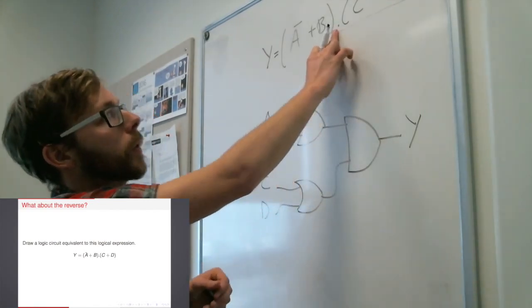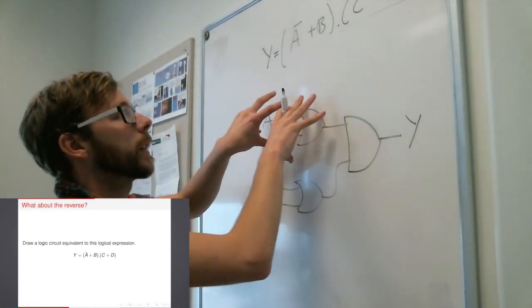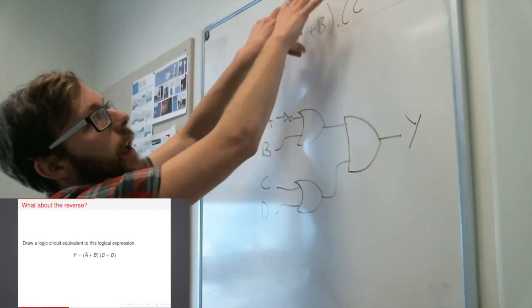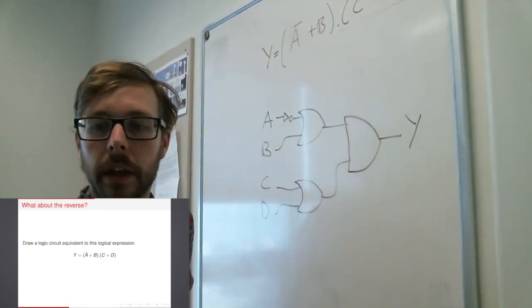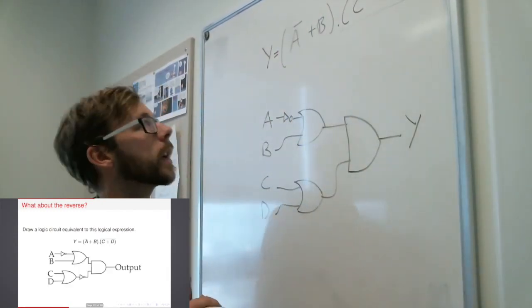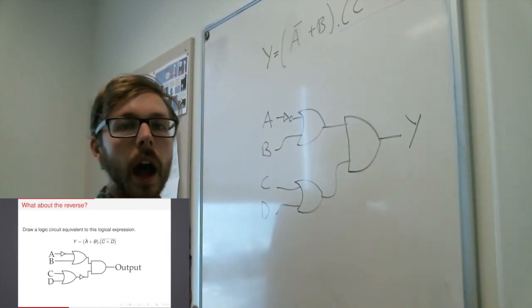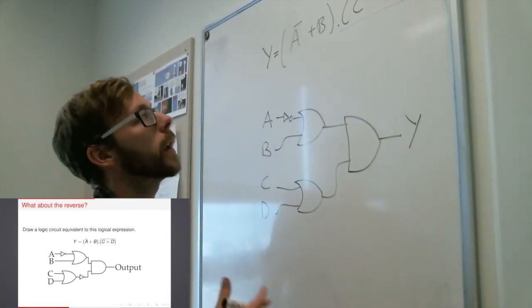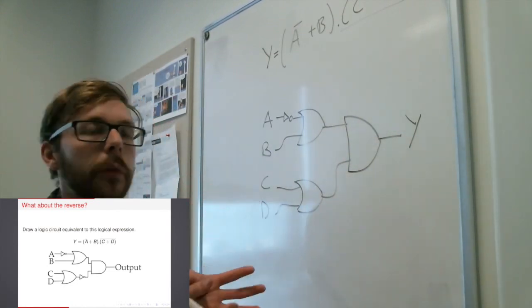So again, I'm just breaking it down into sections. I look for my AND gate first, the final operation. Then I break it down into two chunks and do that chunk and then that chunk, and then just connect it all together separately. So hopefully you can check that my output matches.